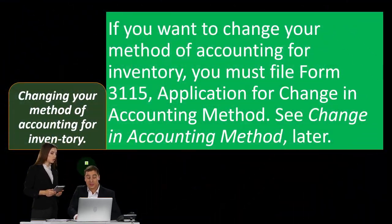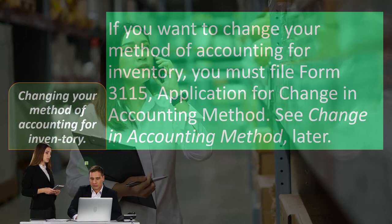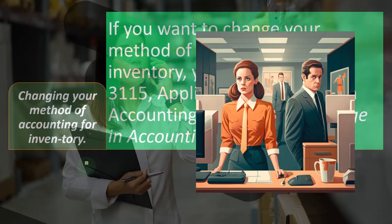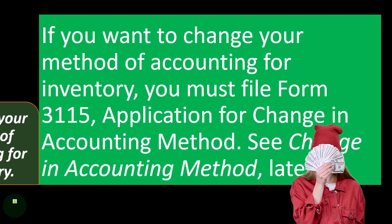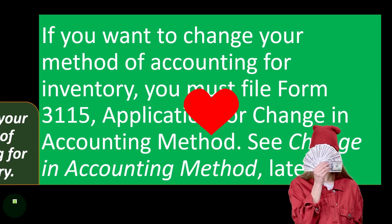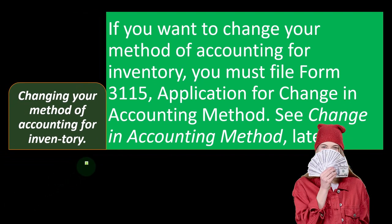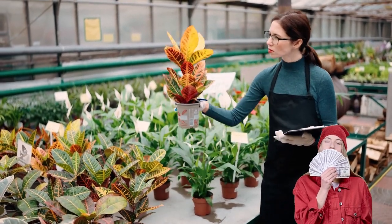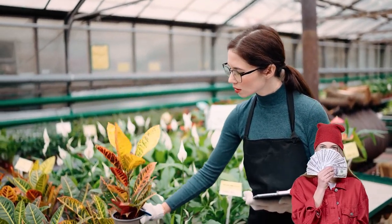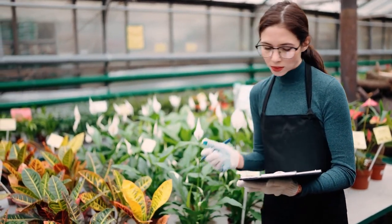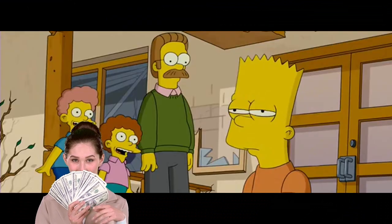Changing your method of accounting for inventory: if you want to change your method of accounting for inventory, you must file Form 3115, Application for Change in Accounting Method — so you've got to ask the IRS for permission. If you had a rational reason for it — for example, inventory has grown to the point where an accrual method is more appropriate — you would think they would accept that rationale. If you just wanted to change it willy-nilly, then they might argue for consistency.